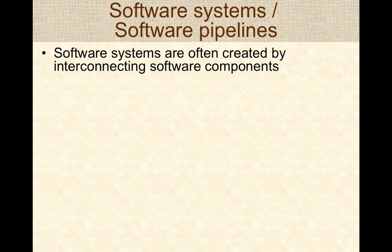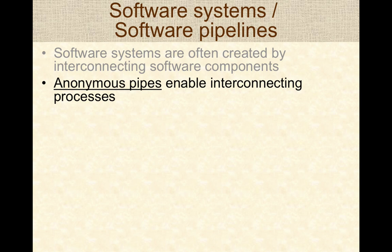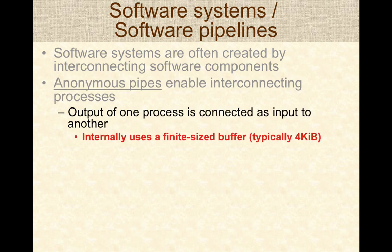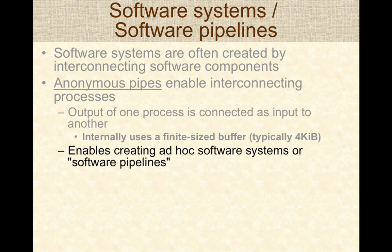Pipes enable construction of software systems by interconnecting programs or software components together. Anonymous pipes enable this interconnection. The output of one process is connected as the input to another, and internally the operating system uses a finite-size buffer to enable data to flow from one process to another. Thus, anonymous pipes enable creating ad-hoc software systems or software pipelines that can be used to solve more sophisticated problems than what a single command can accomplish.